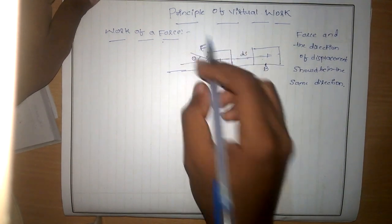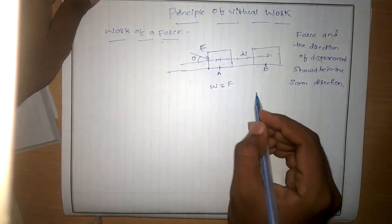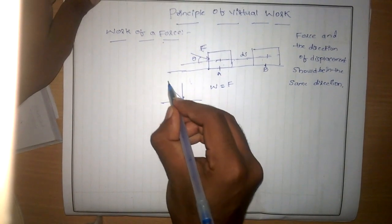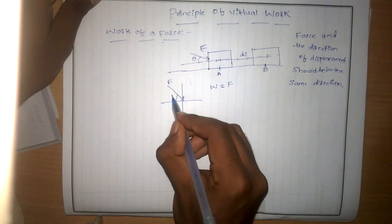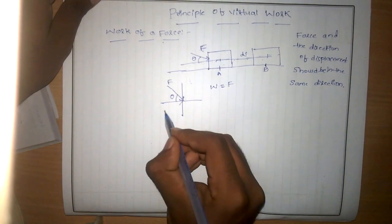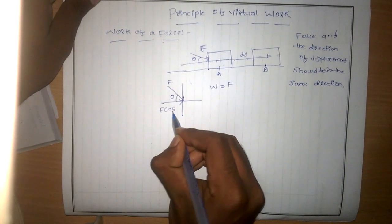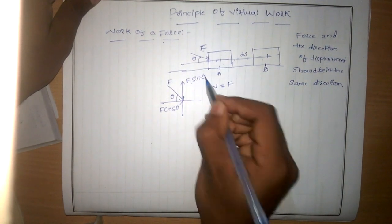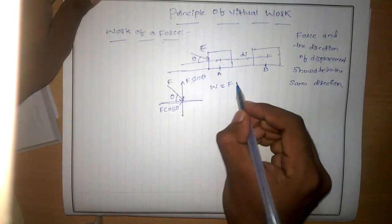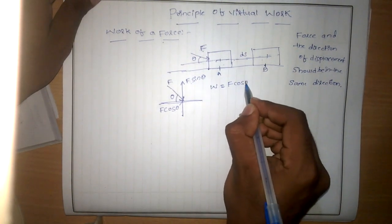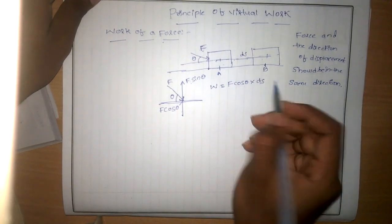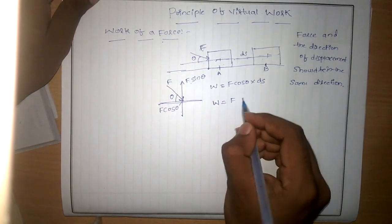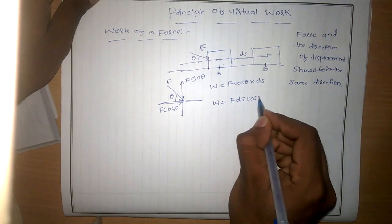The work done by the force equals F into ds cos theta. If we resolve the force component, the force F making angle theta gives F cos theta along the x-axis and F sin theta perpendicular to it. Therefore, the force along x is F cos theta, and work done equals F cos theta into ds, which is F·ds·cos θ.